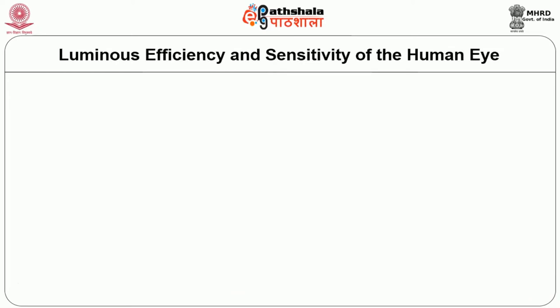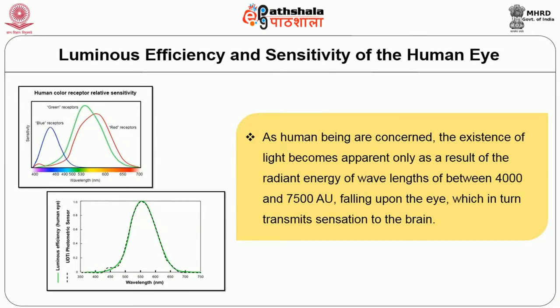Luminous efficiency and sensitivity of the human eye: as far as human beings are concerned, the existence of light becomes apparent only as a result of radiant energy of wavelengths between 4000 and 7500 Angstrom units falling upon the eye, which in turn transmits the sensation to the brain.